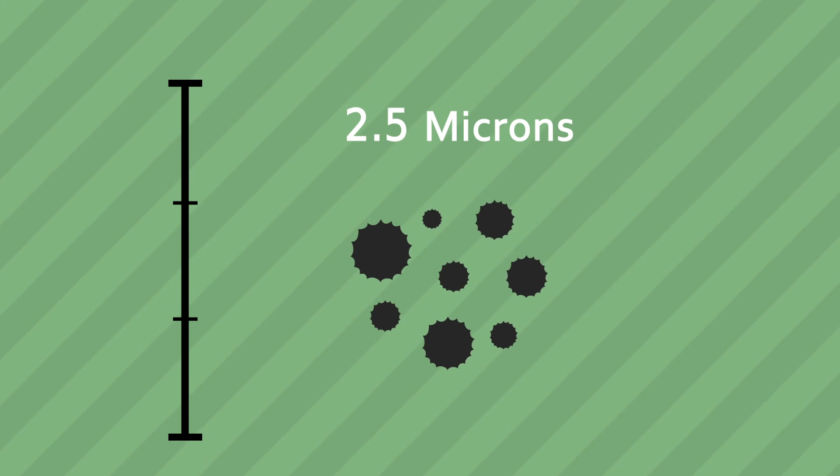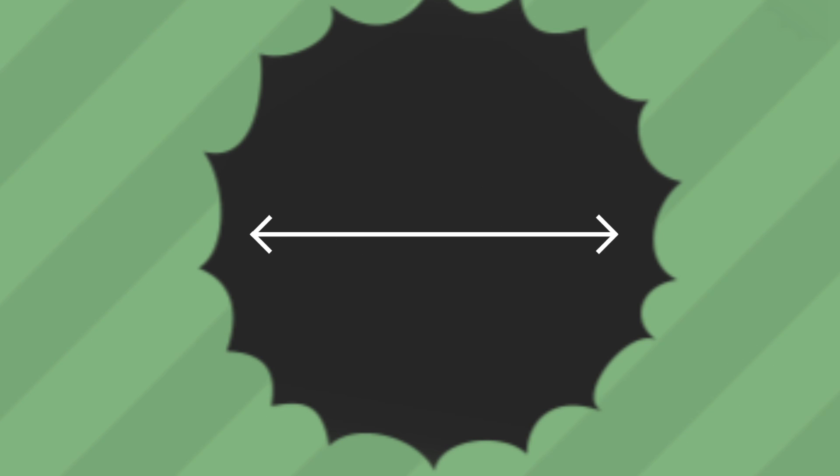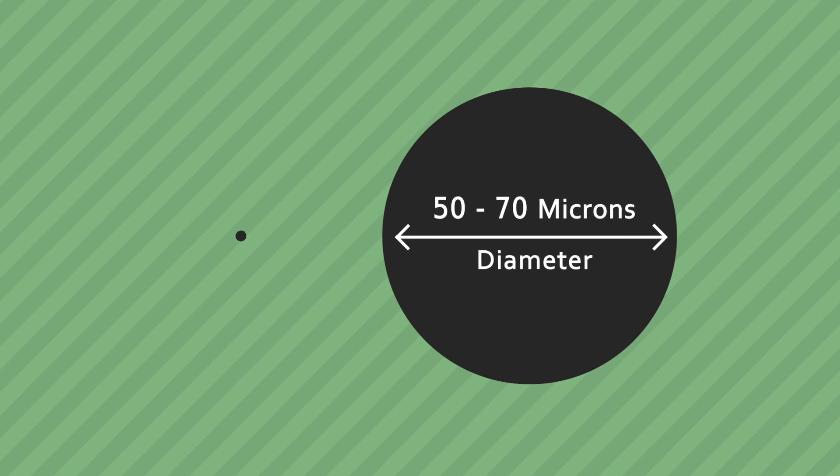It's measured in microns. Quite simply, PM 2.5 is any airborne particle that is 2.5 microns in diameter or smaller. To put that size in perspective, a human hair is 50 to 70 microns in diameter.